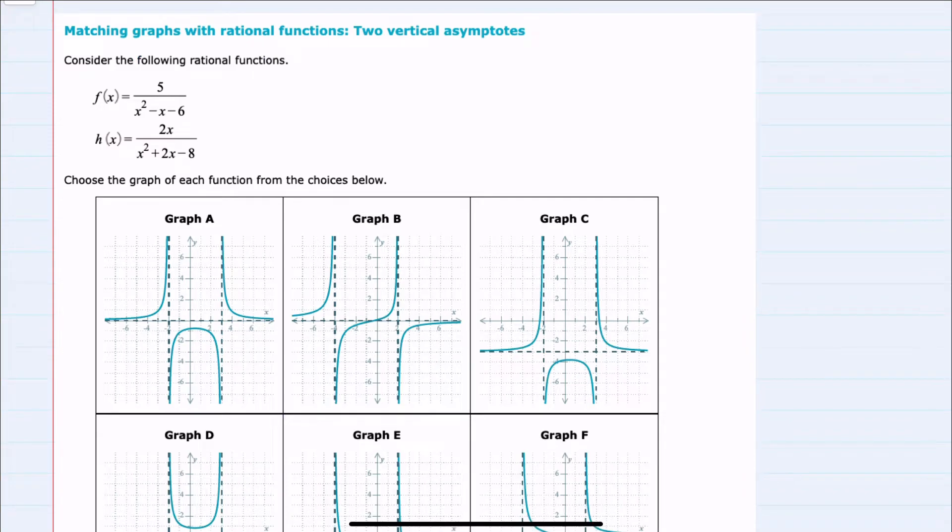So I'll start with f of x. For vertical asymptotes, if the expression has already been simplified, which these are in their simplest form, I can find the vertical asymptotes by setting that denominator equal to zero. So for f of x, we would have x squared minus x minus six equals zero.